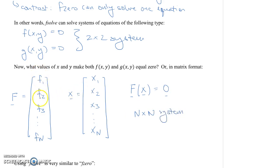Where each one of these little F1s, F2s, etc., is a single equation with n variables in it.